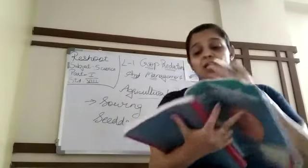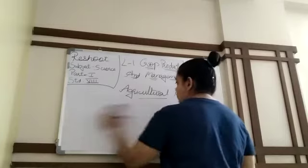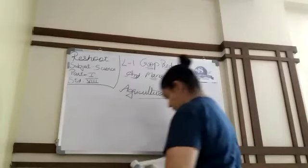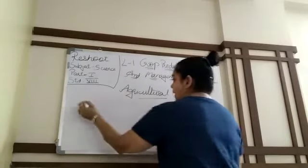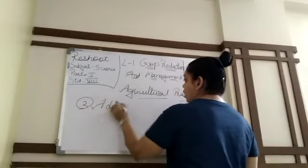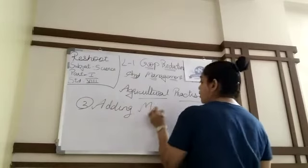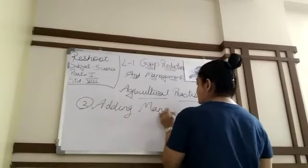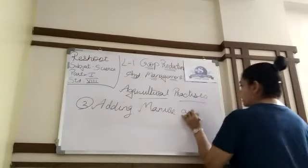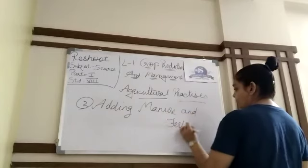Adding manure and fertilizer is the third step of agricultural practices. Manure and fertilizer are necessary for plants to get proper growth and quality of crops. Isliye manure and fertilizers are very necessary.